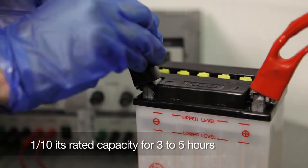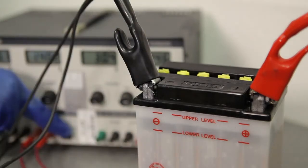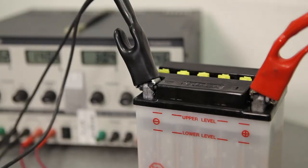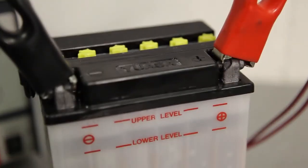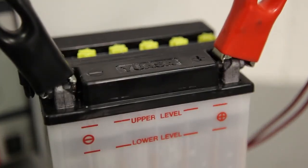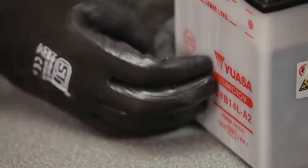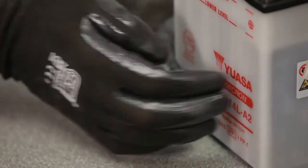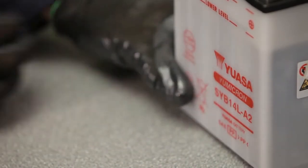Do not connect or disconnect the charger to the battery while the charger is switched on, as this may cause sparks that could ignite the hydrogen gas emitted from the cells during charging. Monitor the electrolyte level during charging and top up to the fill line as necessary.